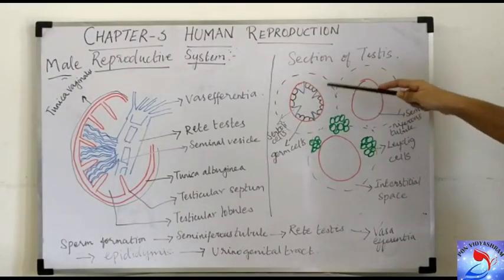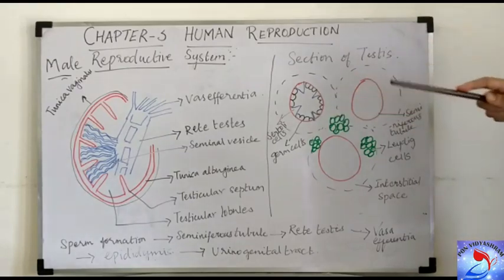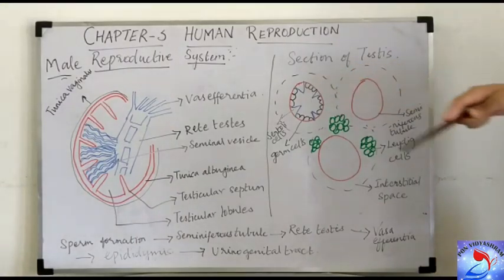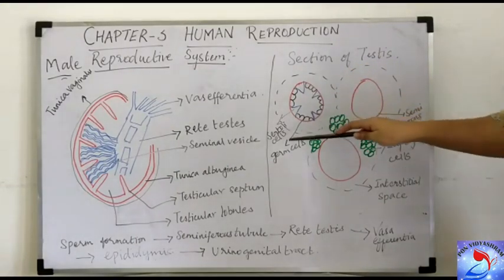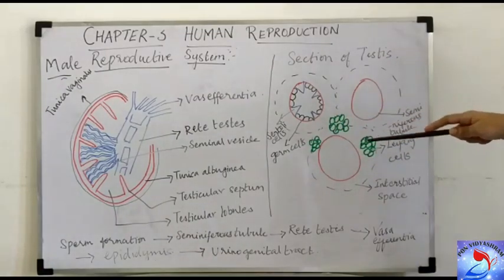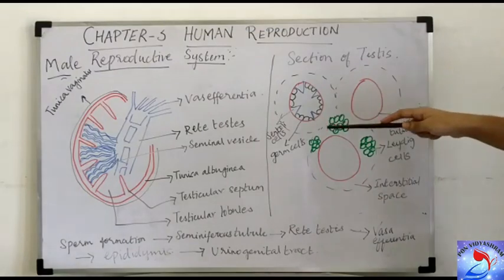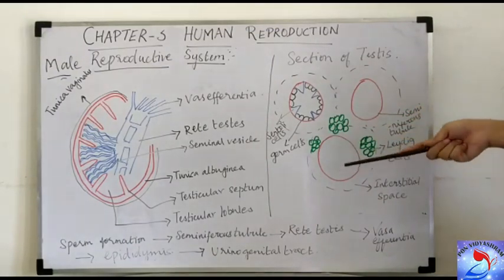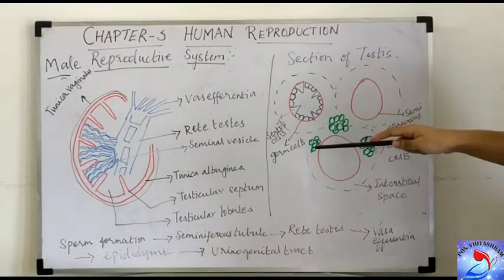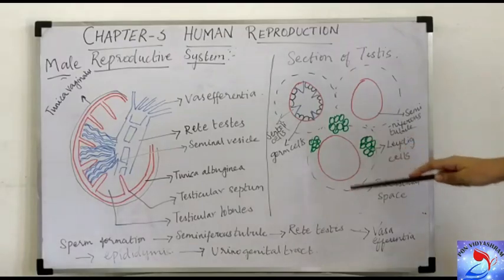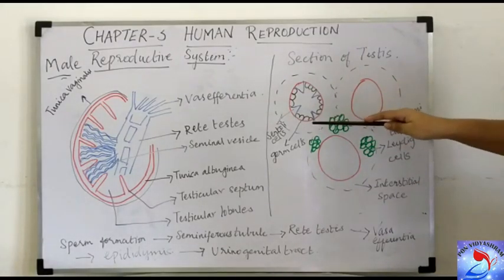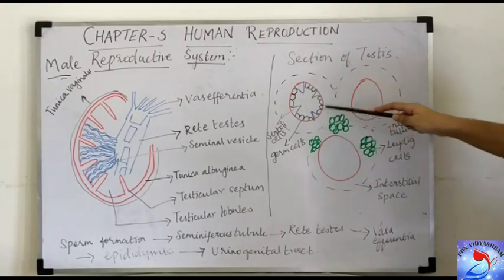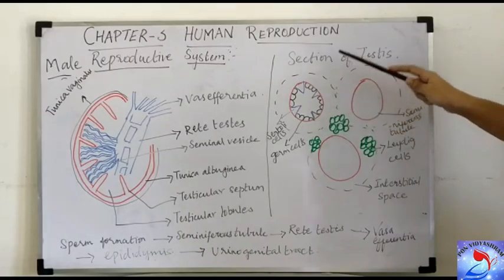The seminiferous tubule consists of two types of cells: the glandular cuboidal cells called germ cells, and the tall triangular cells called Sertoli cells. The germ cells are the mother cells for male gametes. They undergo mitotic division to form primary spermatogonia, and then undergo meiotic division to form the male gamete — the spermatozoid, that is, the sperm. The Sertoli cells are also called nurse cells, as they provide nourishment to the germ cells during spermatogenesis.